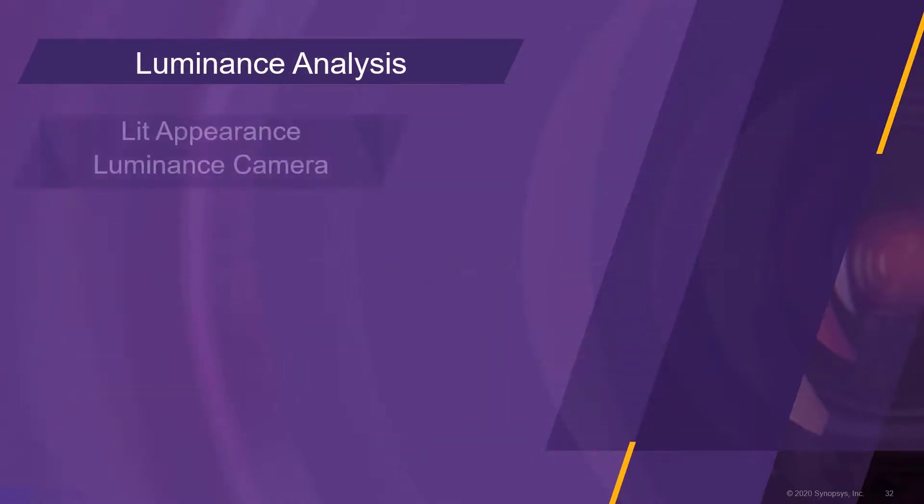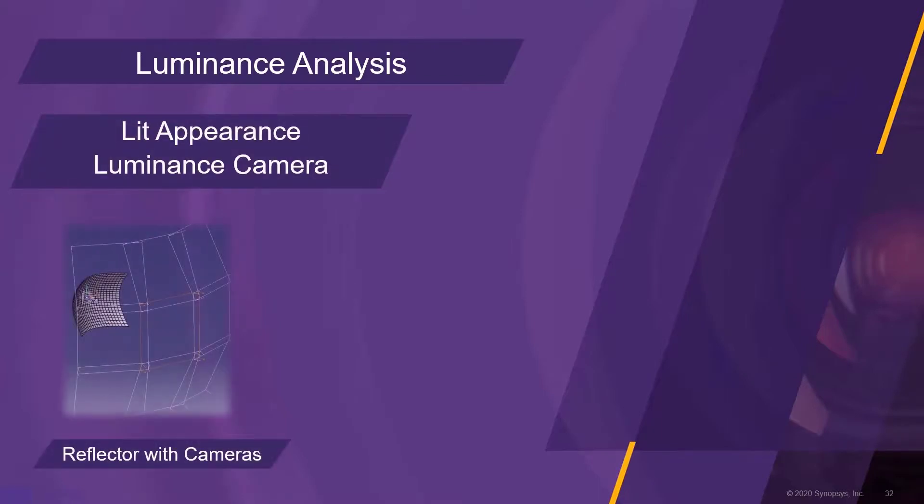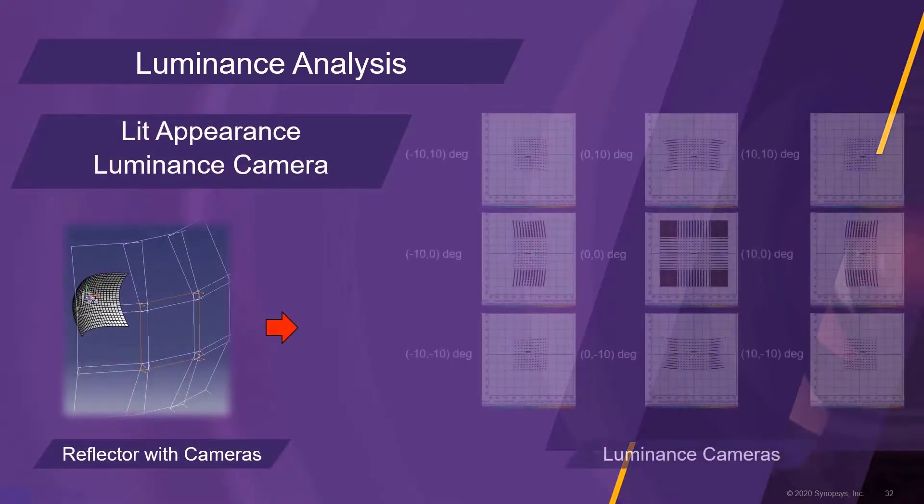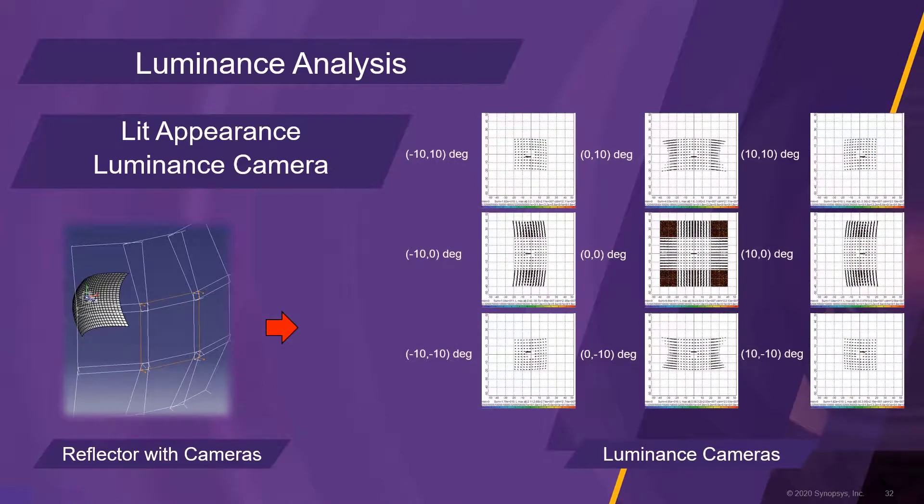For the luminance analysis, for example lit appearance, a luminance camera is available. The luminance camera sensor can be positioned in space like a real camera and can produce luminance views from a specific perspective. Utilizing the panorama feature, different viewing perspectives can be linked together, allowing for an interactive, immersive navigation through the views.